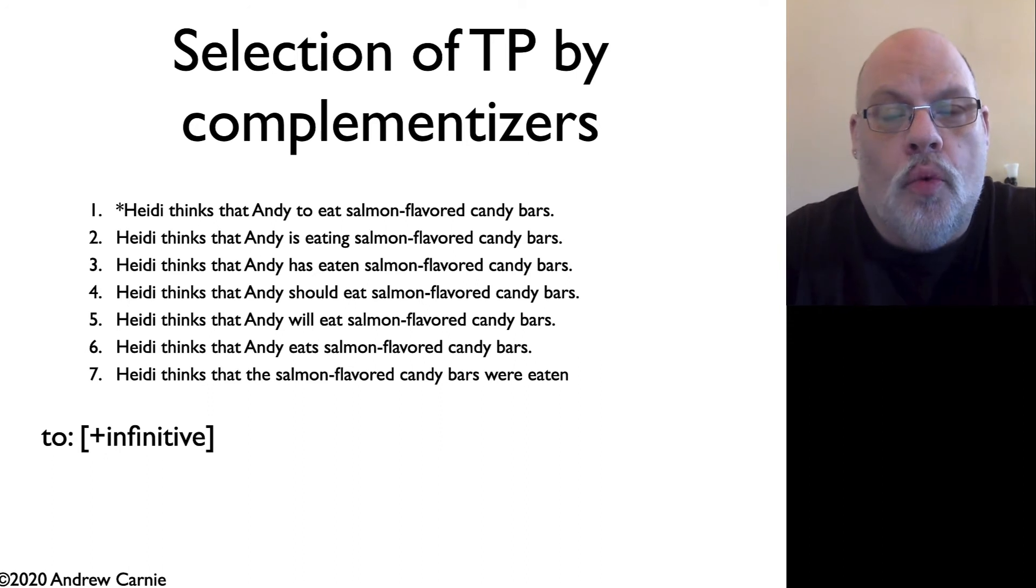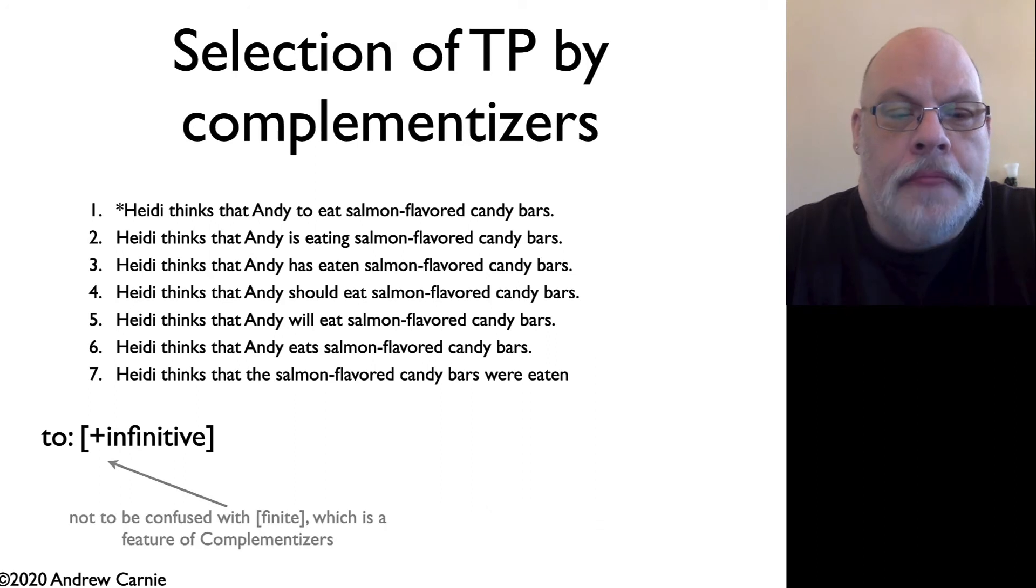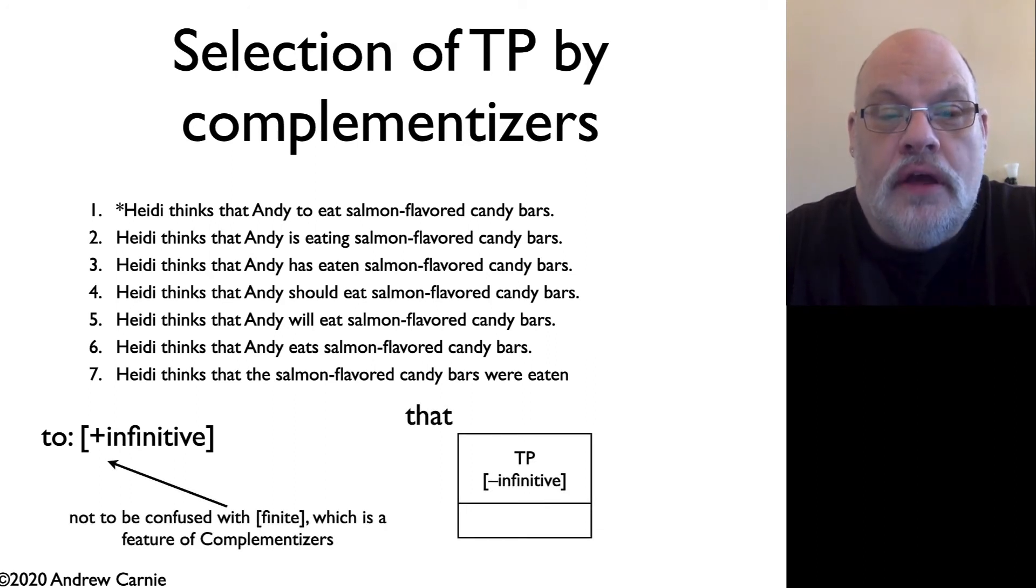So how are we going to mark this? We've got to, first of all, identify one kind of tense node that shows up with 'to'. We're going to claim that 'to' has a special feature plus infinitive. Again, notice this is not the same as the feature finite, which is a property of complementizers. And we can state the restriction on 'that' the following way. We can say that requires a TP that is minus infinitive. So it'll take a TP that's headed by anything other than an infinitive marked by 'to'. So again, here, what we're doing is we're using theta grids to explain the distribution of selection and subcategorization.